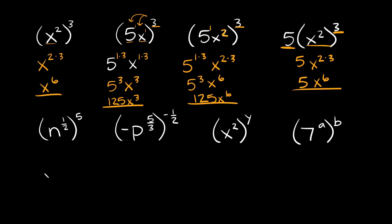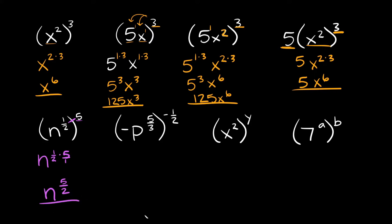Now let's do a few problems with fractions. We have n raised to the 1/2 in parentheses, all raised to the fifth power. You're just going to multiply these two exponents together: n raised to 1/2 times 5. Thinking of it as 1/2 times 5/1 and multiplying straight across, you get n raised to 5/2. That's your answer.